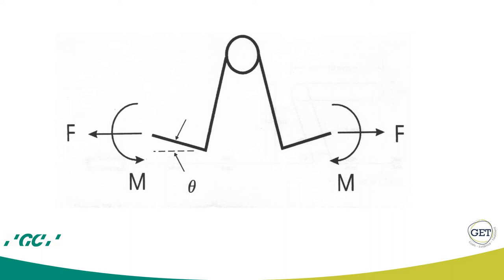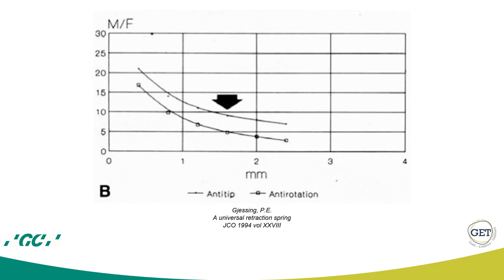What's important to understand is shown in this diagram. When you open a loop — as seen on the x-axis showing millimeters of opening — at the beginning, say 2.5 mm, the moment-to-force ratio is very low. Why? Because the moment generated by the angulation of the two feet of the loop stays the same regardless of horizontal opening, but when the loop is very open, there is a lot of force trying to close it. So with high force, the moment-to-force ratio will be lower, meaning you tend to create tipping — the lower the moment-to-force ratio at the crown, the more tipping you get.